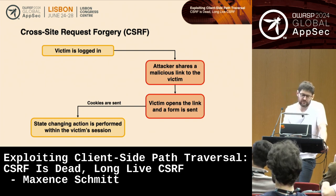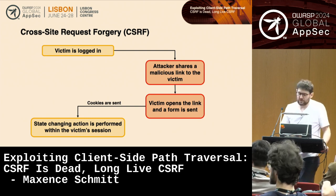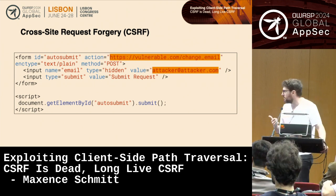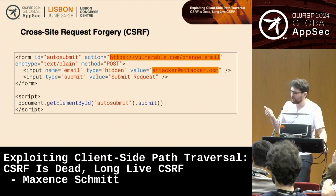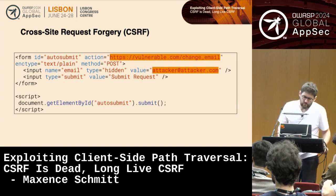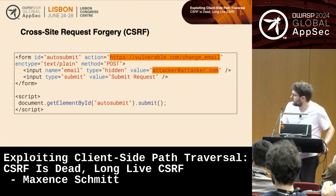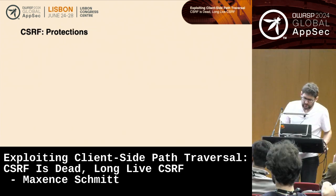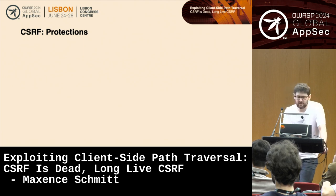The malicious request performs a state-changing action within the victim's session. An attacker will craft a form — a very simple one — that sends a request to vulnerable.com with a parameter like email, trying to take over the victim's email. That's the basics of CSRF. There are protections that exist to protect against this.